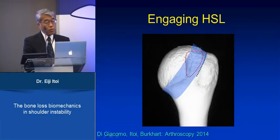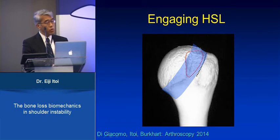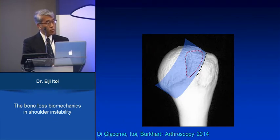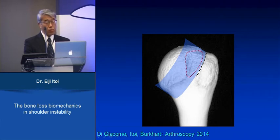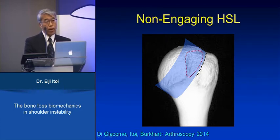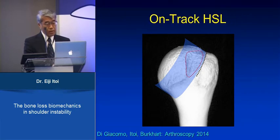The term 'engaging Hill-Sax lesion' is confusing and sometimes erroneously used. To avoid this confusion, we propose new terminology. If the Hill-Sax lesion is outside the glenoid track and causes engagement, instead of calling it an 'engaging Hill-Sax lesion,' we propose the term off-track Hill-Sax lesion. If the Hill-Sax lesion stays within the glenoid track, instead of 'non-engaging,' we propose the term on-track Hill-Sax lesion.